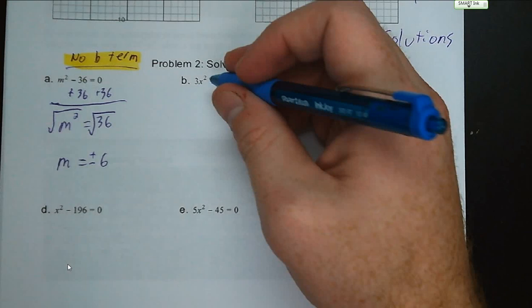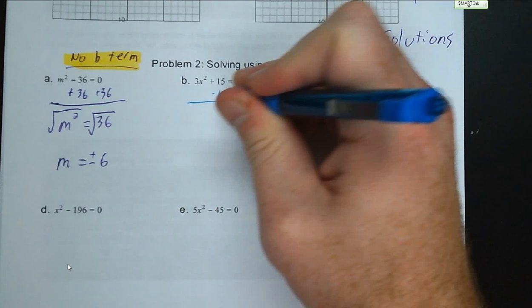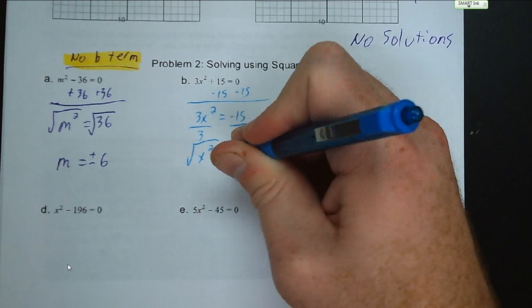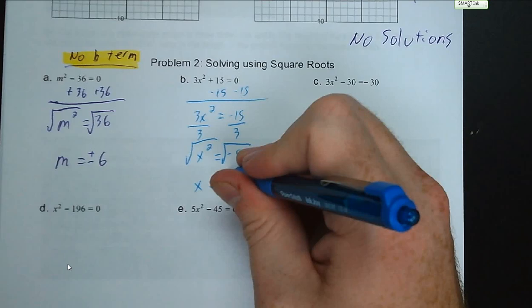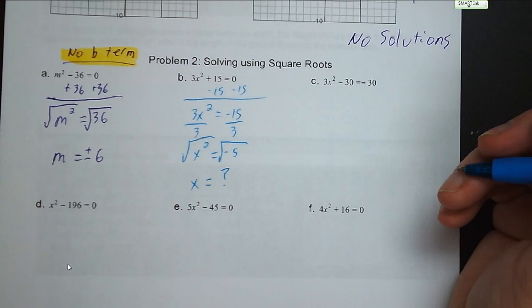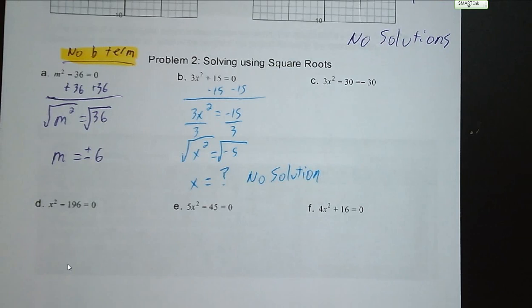Letter B: we subtract 15 from both sides to get 3x squared equals negative 15. Divide both sides by 3: x squared equals negative 5. When we take the square root, we have no numbers that can multiply by themselves to equal a negative, so this is no solution. As a preview: when you get to Algebra 2, that's when you start to introduce imaginary numbers.